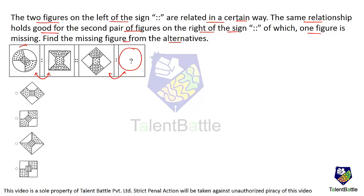If you observe, this one turns by 45 degrees in the clockwise direction, and over here it also turns 45 degrees. So this one should also turn 45 degrees. After turning 45 degrees, it will become a square. On the inside, this one also turns 45 degrees and will become this. Since it becomes a square, these two options get eliminated. Now out of the remaining options, inside there is a diamond, so only this option is correct.